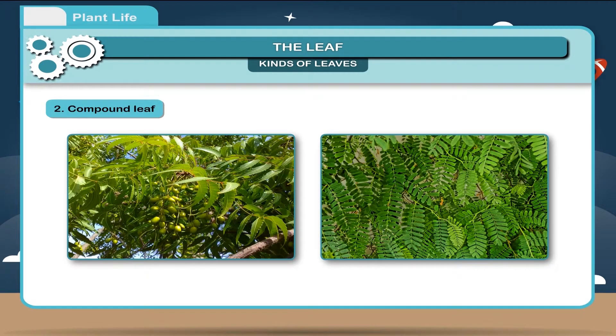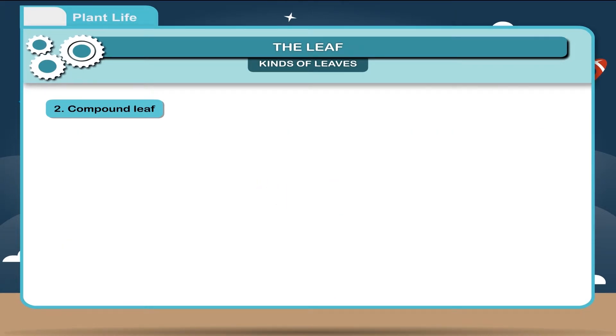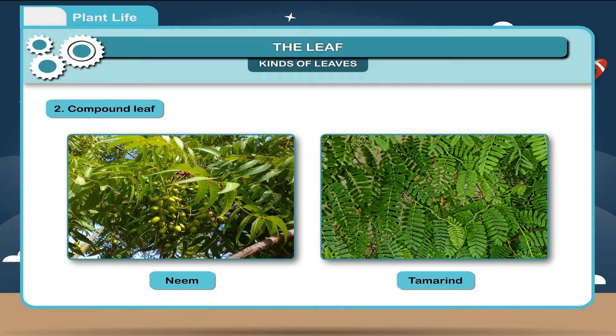Compound leaf. When lamina is cut down up to the midrib or petiole to form many leaflets, such a leaf is called a compound leaf. The stalk or main stem of a compound leaf is called rachis. Example, leaves of neem, tamarind etc.